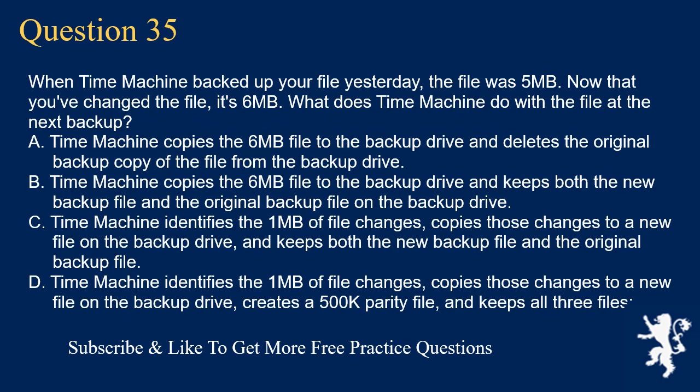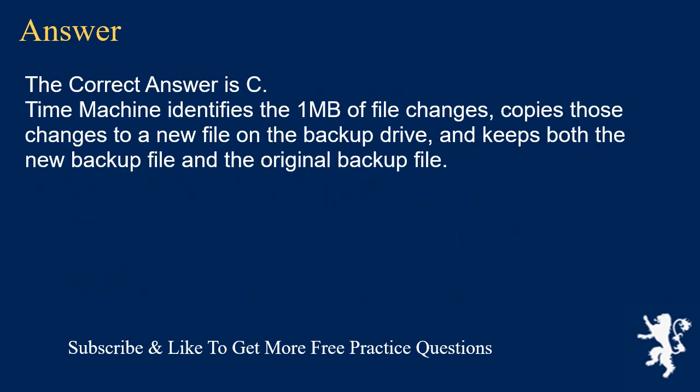Question 35. When Time Machine backed up your file yesterday, the file was 5MB. Now that you've changed the file, it's 6MB. What does Time Machine do with the file at the next backup? A. Time Machine copies the 6MB file to the backup drive and deletes the original backup copy of the file from the backup drive. B. Time Machine copies the 6MB file to the backup drive and keeps both the new backup file and the original backup file on the backup drive. C. Time Machine identifies the 1MB of file changes, copies those changes to a new file on the backup drive, and keeps both the new backup file and the original backup file. D. Time Machine identifies the 1MB of file changes, copies those changes to a new file on the backup drive, creates a 500k parity file, and keeps all three files. The correct answer is C: Time Machine identifies the 1MB of file changes, copies those changes to a new file on the backup drive, and keeps both the new backup file and the original backup file.